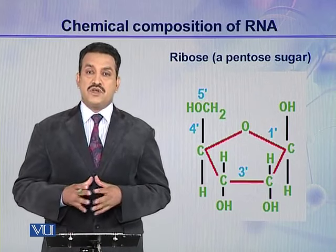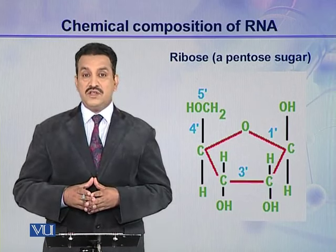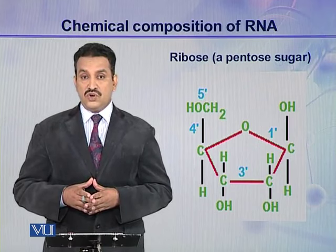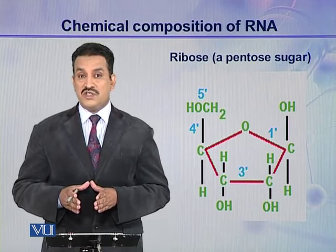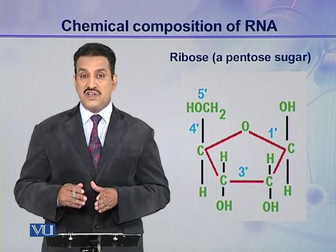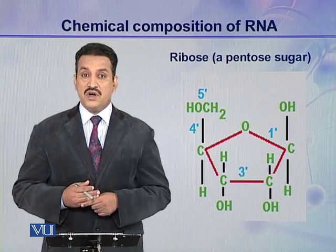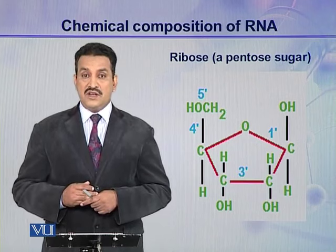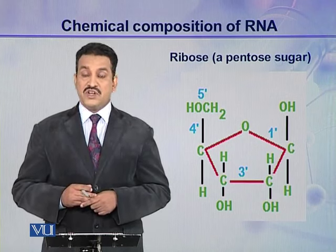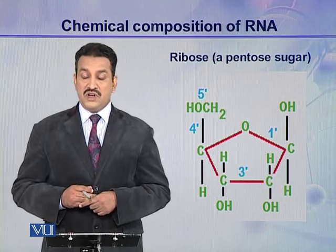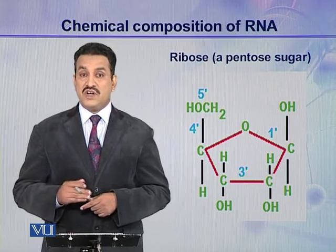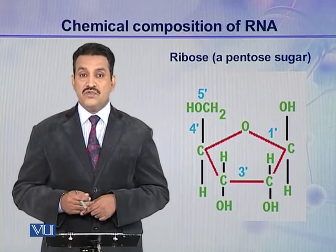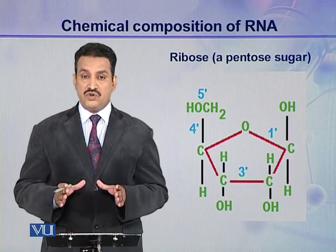The first component of ribonucleic acid is a pentose sugar, and here the pentose sugar is ribose. In DNA, this sugar is also present but in its derivatized form, which is deoxyribose sugar. You can see that at carbon number 2, an OH group is present here. But in case of deoxyribose sugar, only hydrogen was present — oxygen was removed. So the pentose sugar in RNA is ribose instead of deoxyribose.